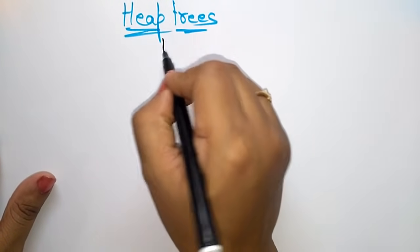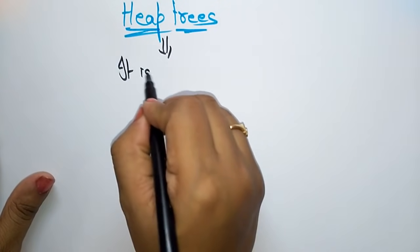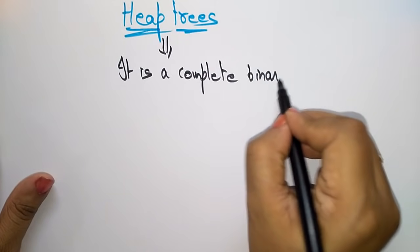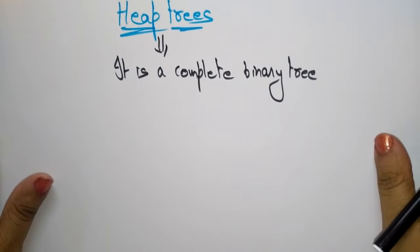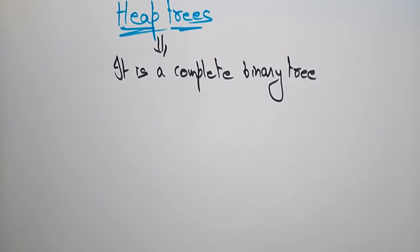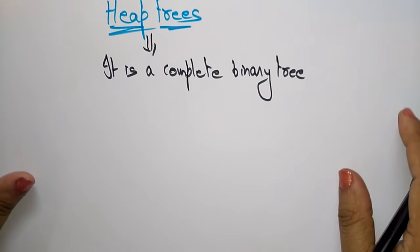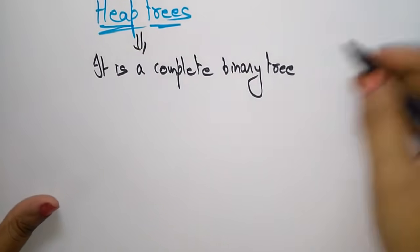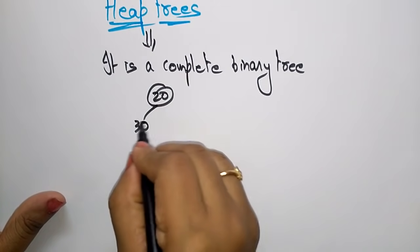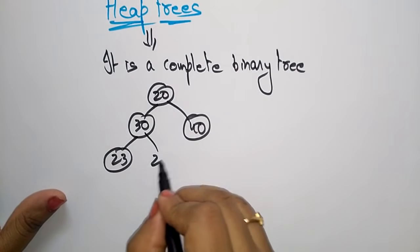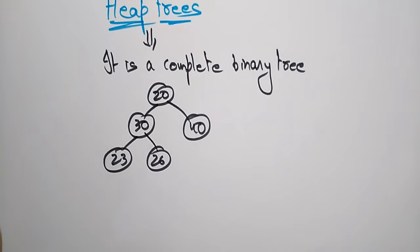Actually, what is a heap tree? A heap tree is a complete binary tree. A binary tree means a node is having at most two children. Whenever the last level children are filled — for example 20, 30, 40, 23, 26 — you can say this is a complete binary tree.